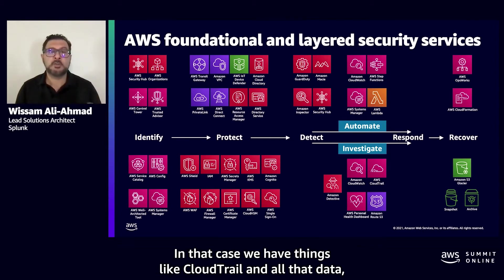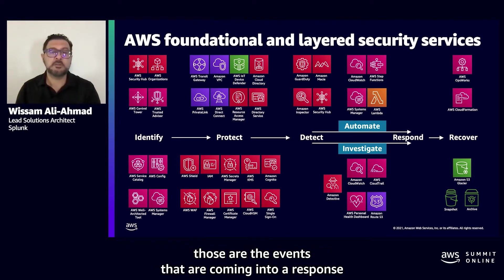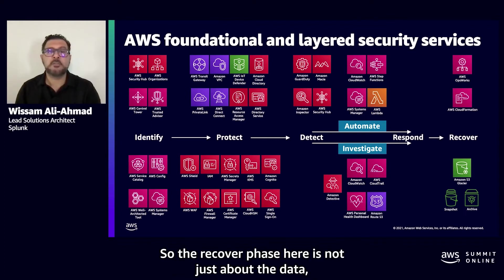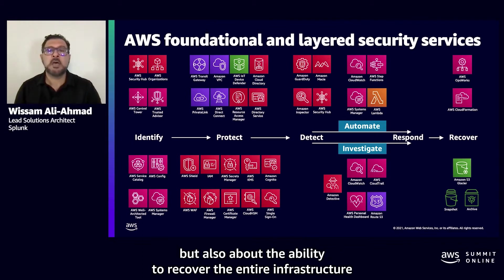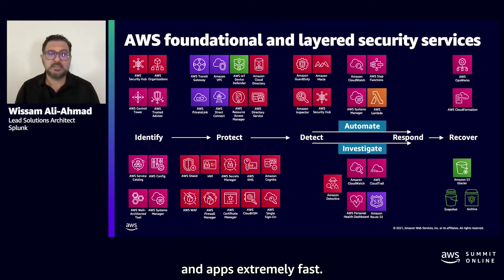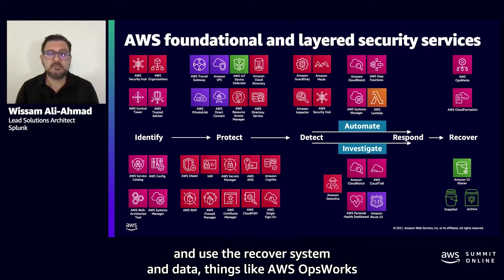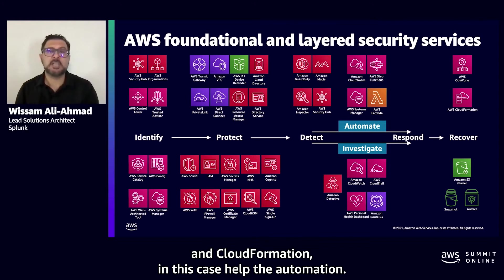The recover phase is not just about the data, but also about the ability to recover the entire infrastructure and applications extremely fast. AWS services help take point-in-time snapshots and recover systems and data. Things like AWS OpsWorks and CloudFormation help with that automation. These are the use cases today to protect your account, your resources, and compliance.